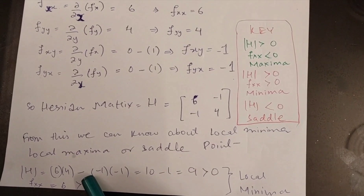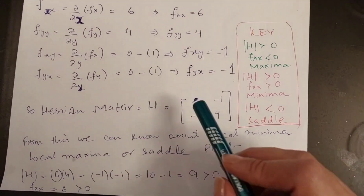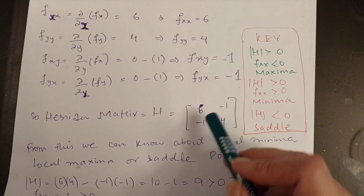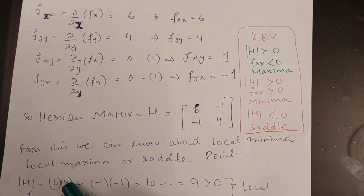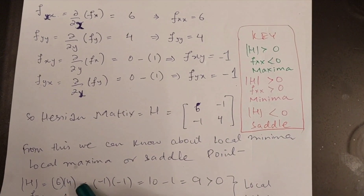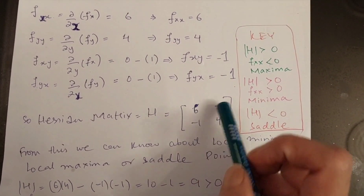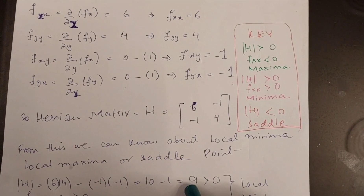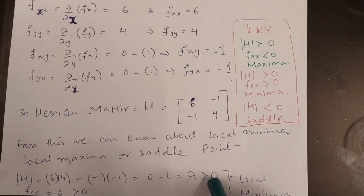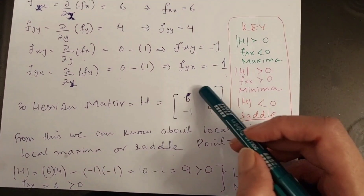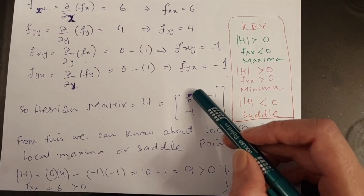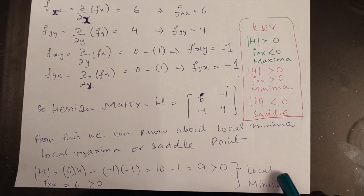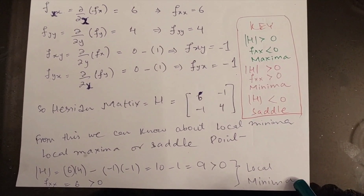We are going to calculate the determinant. The determinant is calculated by multiplying the main diagonal terms minus the off-diagonal terms: 6 times 4 minus (minus 1 times minus 1), which gives 24 minus 1, equal to 23. So it is larger than 0, and fxx is 6, which is also larger than 0. So we can conclude that we are standing on a local minima.